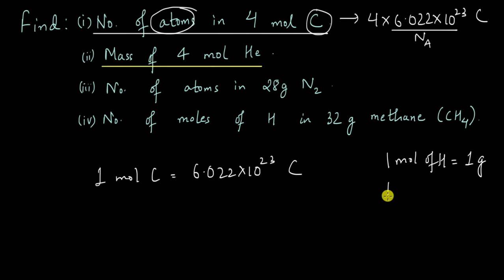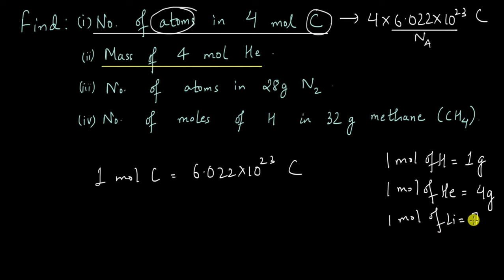The advantage of defining one mole as this number is that when we take one mole of hydrogen, its weight is 1 gram. When we take one mole of helium, its weight is 4 grams. One mole of lithium is 7 grams. You don't have to take my word for it — take Avogadro's number, multiply it by the mass of one atom of hydrogen, and you will get 1 gram. The same works for helium and lithium.